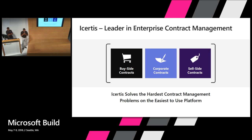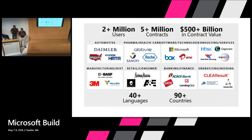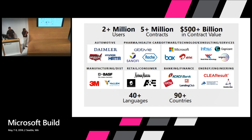So who is iCertis? iCertis is the leader in enterprise contract management. Every enterprise has one or another type of contracts they deal with — either for the customer, the vendor, or corporate contracts like NDA or M&A contracts. iCertis is a platform on which contract management can be done for any type of contract: sell side, buy side, or corporate contracts.